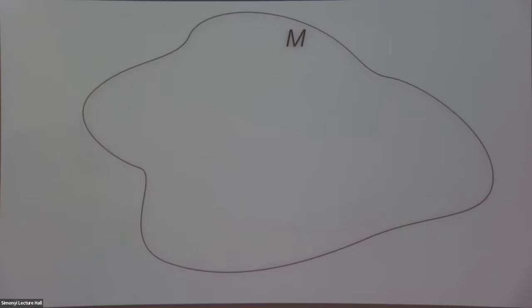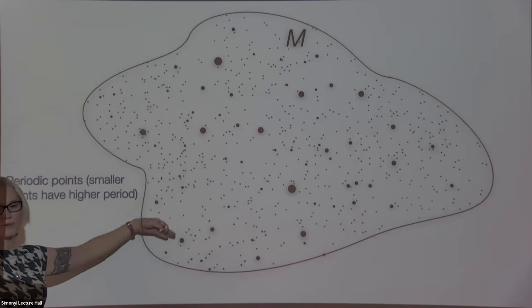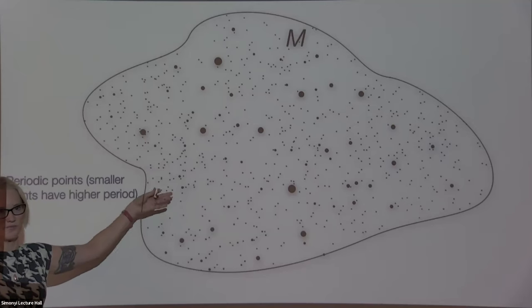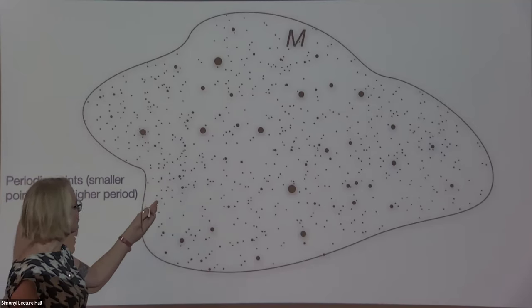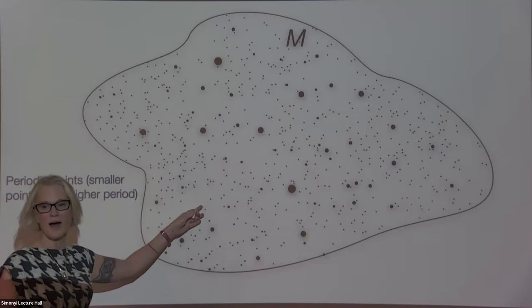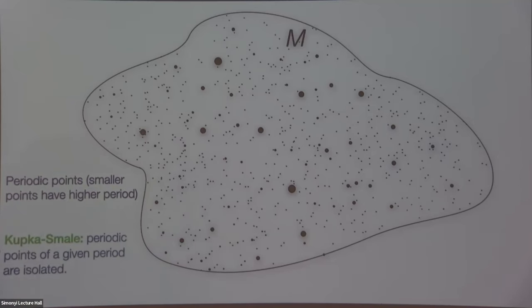Here's our manifold M — a blobby-looking manifold — and I've depicted a set of periodic points. For the generic diffeomorphism, there are periodic points (which follows from Pugh's theorem). I've tried to distinguish points of different period by making higher-period ones smaller, giving a picture of them being isolated. That's the Kupka-Smale theorem: there are only finitely many of a given period.